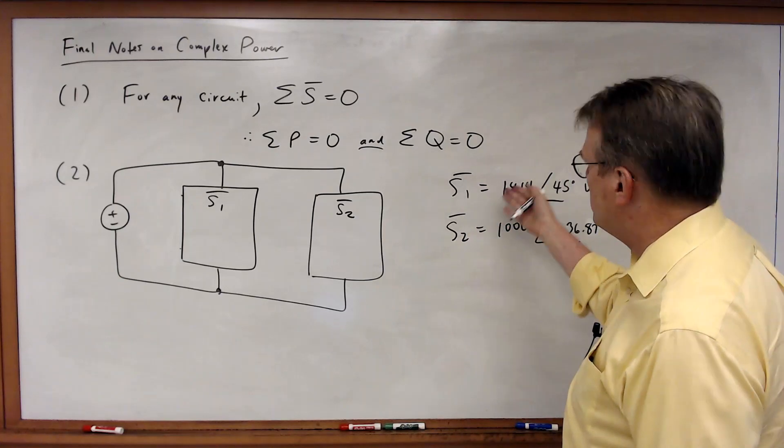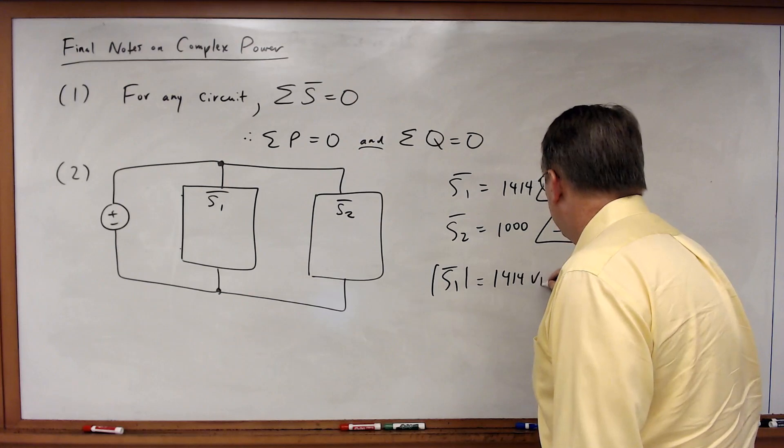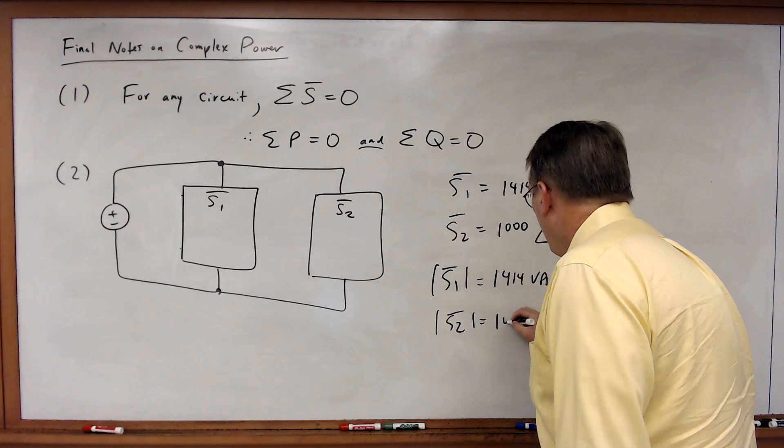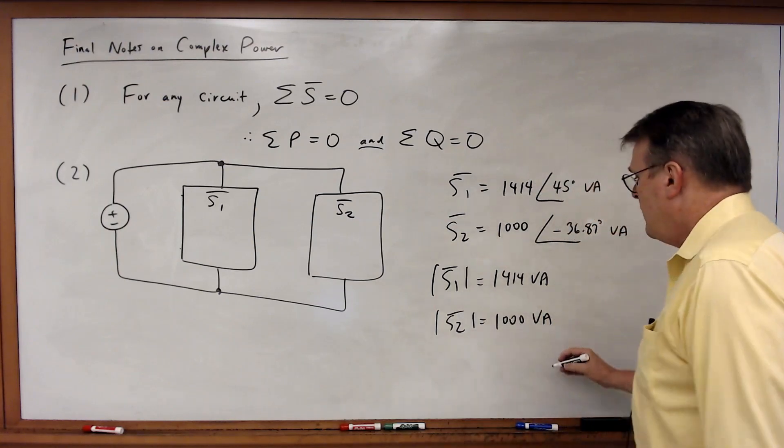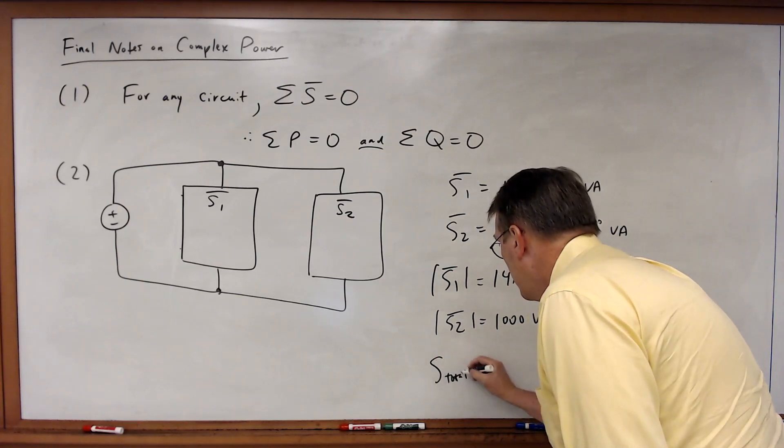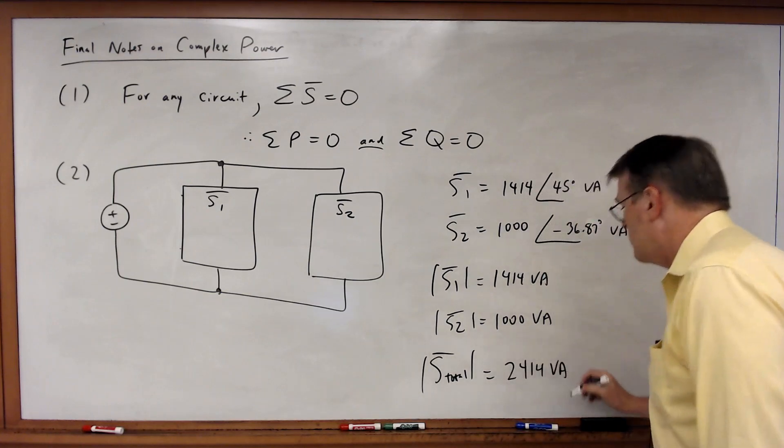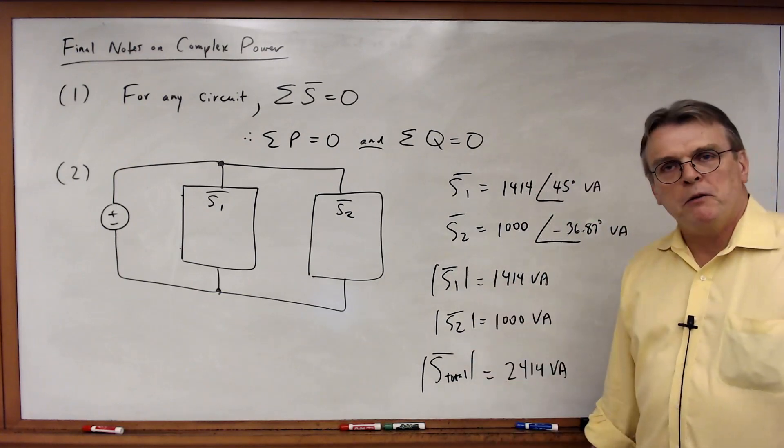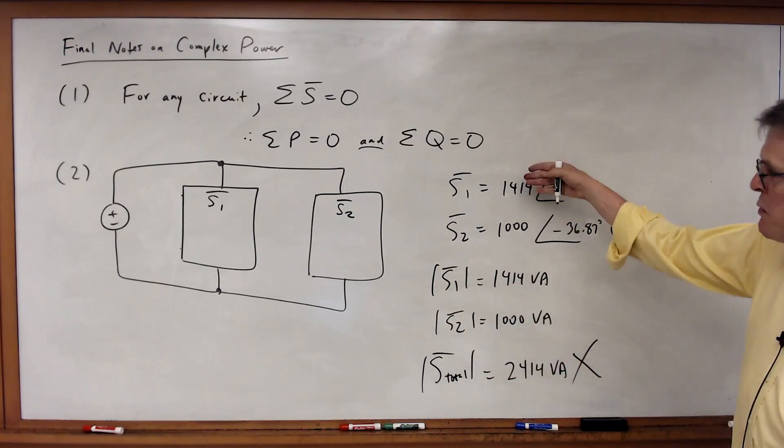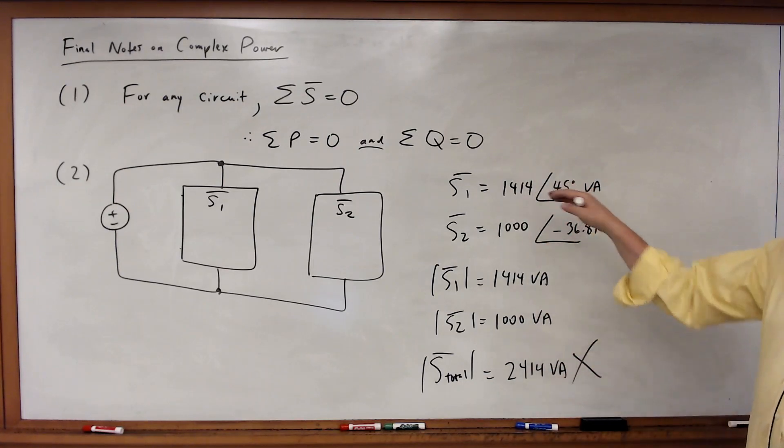So here's a common mistake. People will look at this and say, well, by inspection, the apparent power of S1 is 1414 VA. The apparent power of S2 is equal to 1000 volt amperes, and therefore the total for both must be equal to 2414 volt amperes. Lots of people will do this, summing these together. Problem is, that's incorrect. You can't add complex powers this way, or you can't add apparent powers, not in polar form.